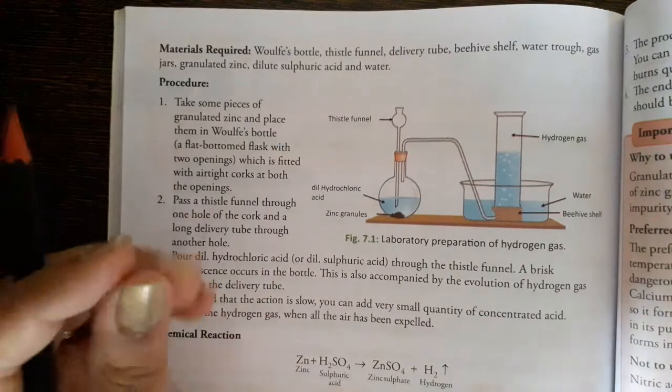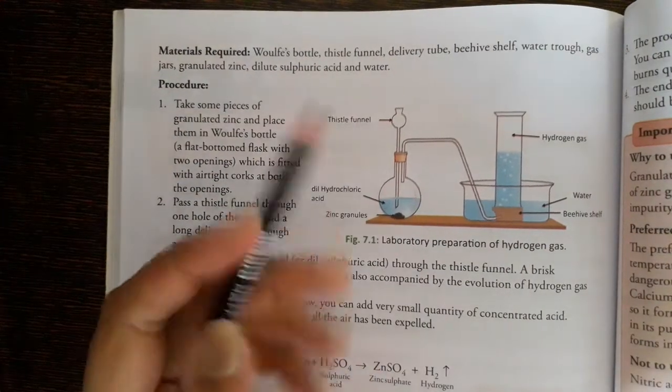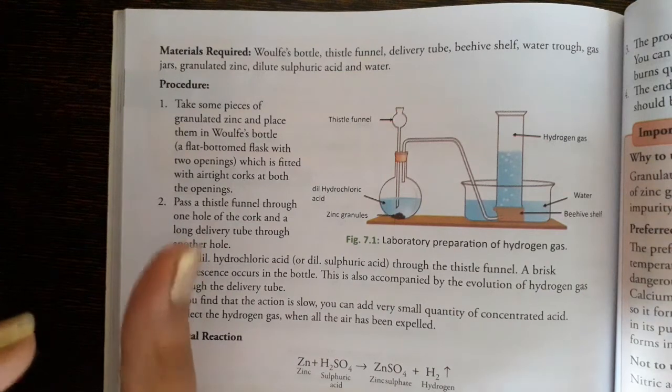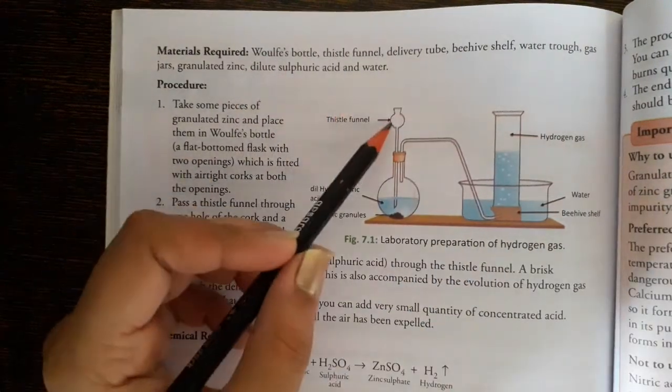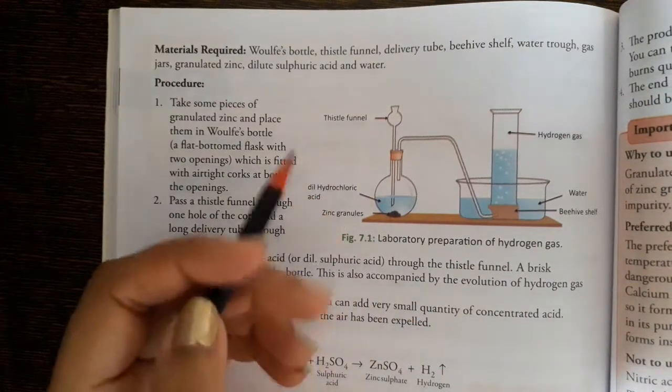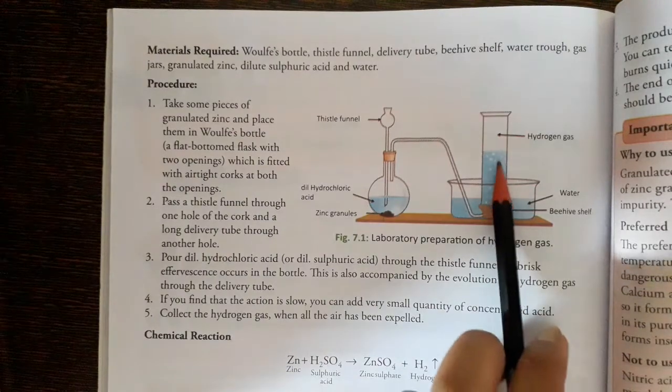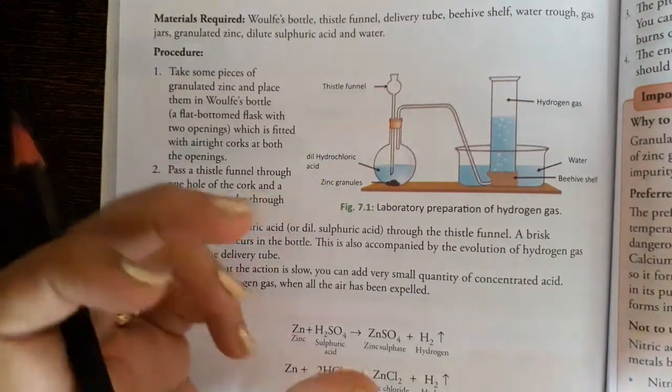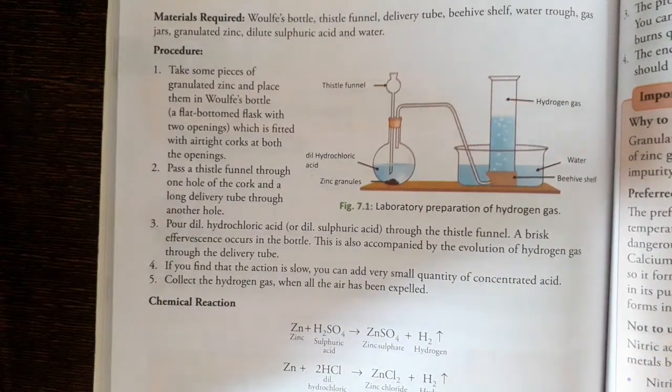Look at this diagram of laboratory preparation of hydrogen. First of all, we need granulated zinc - small granules of zinc. We took a Woulfe bottle. In the Woulfe bottle we added zinc granules. On the Woulfe bottle is a flat bottom flask which has two openings. In one opening we added a thistle funnel. The thistle funnel should be dipped below the zinc granules. In this we added zinc granules and hydrochloric acid. If the process is too slow, we can add some amount of concentrated sulfuric acid.